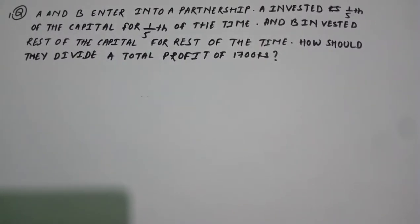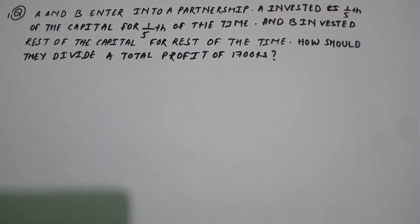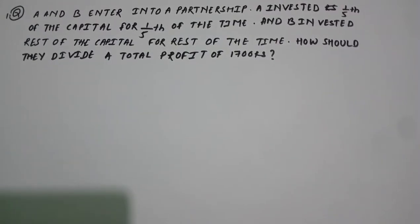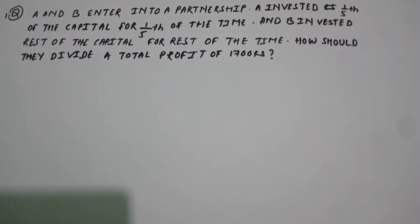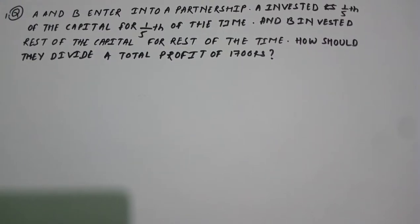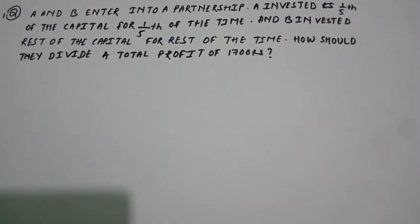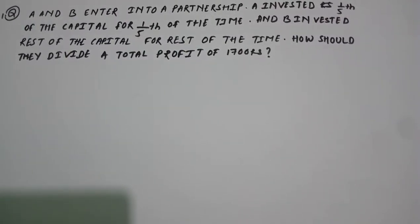According to the example, A and B enter into a partnership. A invested one-fifth of the capital for one-fifth of the time, and B invested the rest of the capital for the rest of the time. How should they divide a total profit of rupees 1700?